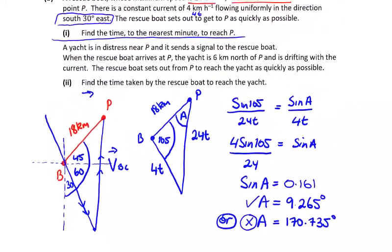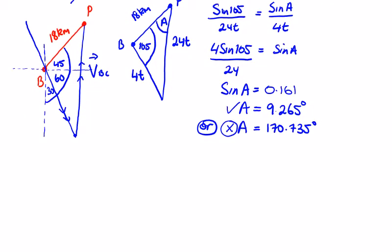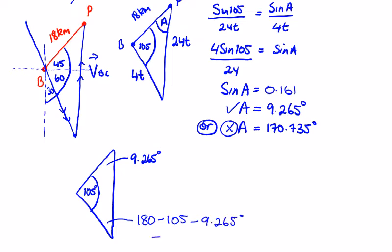Okay, so now we're looking for time here. Let's draw this triangle out again. I've got my 105, I have my 9.265, so this angle down here is going to be 180 minus 105 minus 9.265. So that's going to give me, we'll call that the angle C, so C is equal to 65.735.